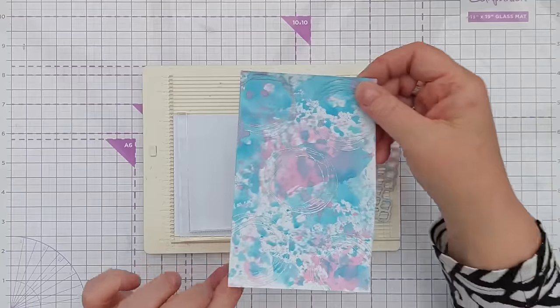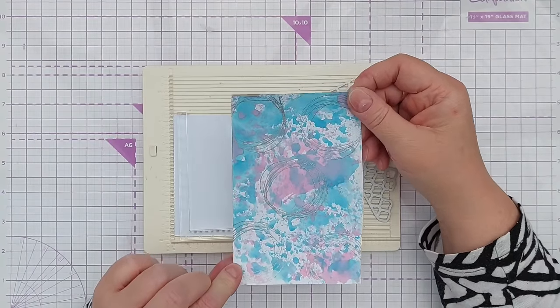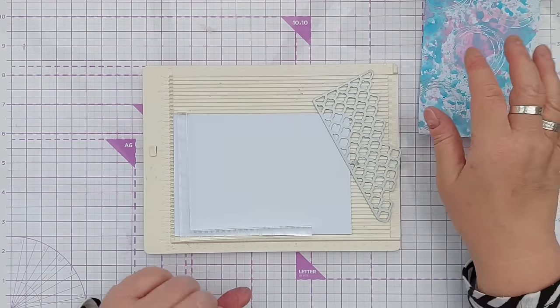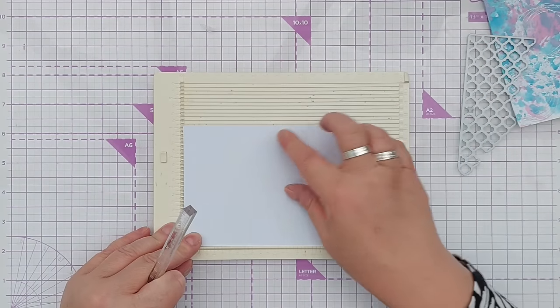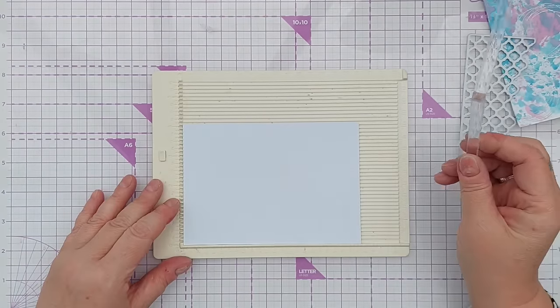So I think this would really lend itself to going behind an aperture in a card panel, so that's what I'm going to do with these pieces. I've got a piece of smooth white cardstock about four by six inches which is the full size of the card that I'm going to do.